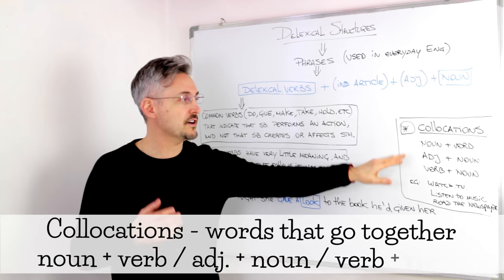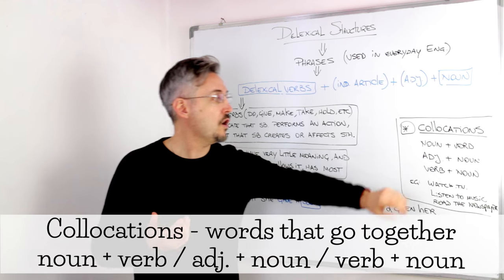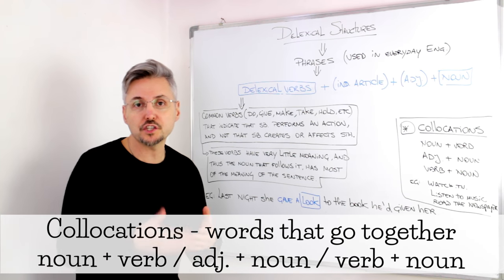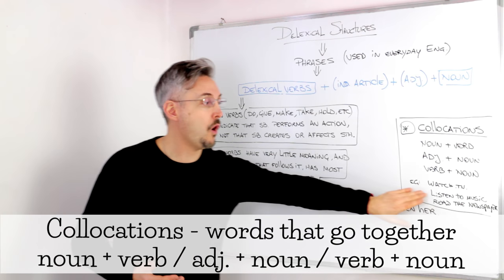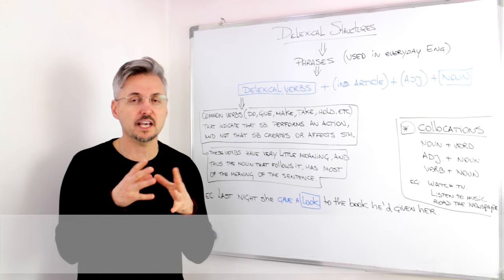But collocations are nouns plus verbs, or adjectives plus noun, or a verb plus noun. So, for example, watch TV, listen to music, or read the newspaper. They are usually put together. They are collocations. These are called collocations.